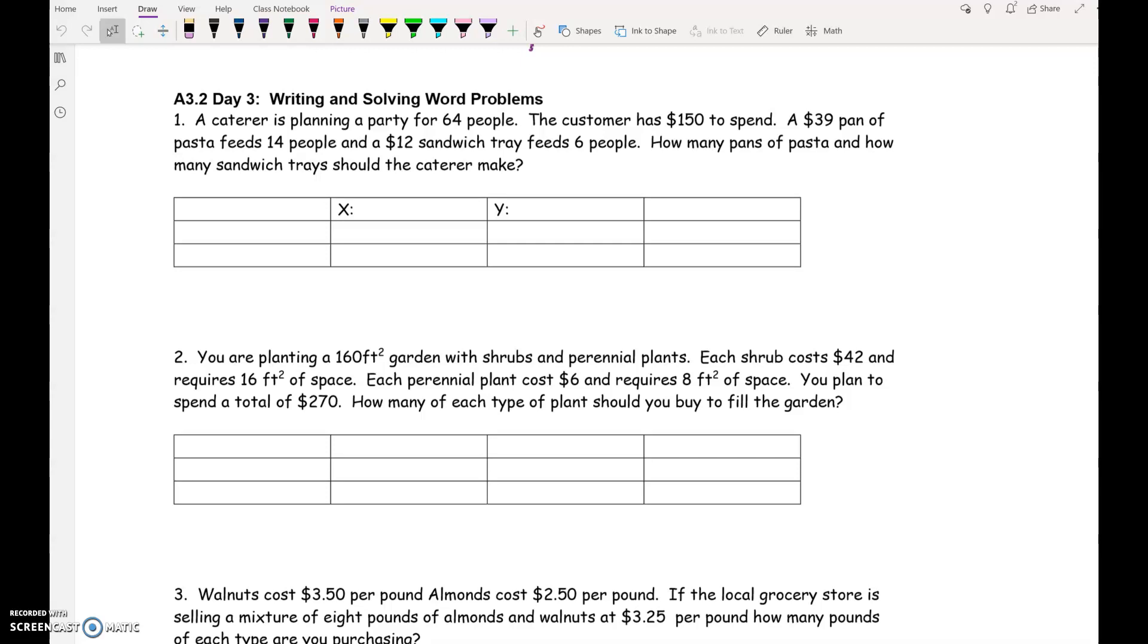Now, the most important line in this entire thing is, how many pans of pasta and how many sandwich trays should the caterer make? That's the question we have to answer. In English, the first sentence is the most important. In math, the last sentence is most important.